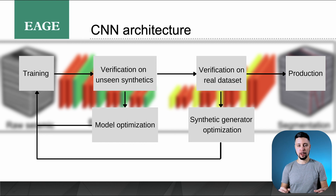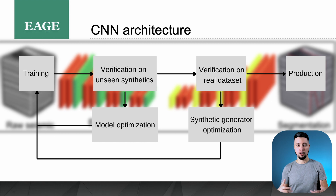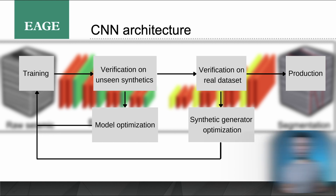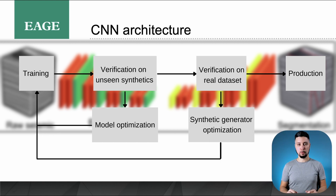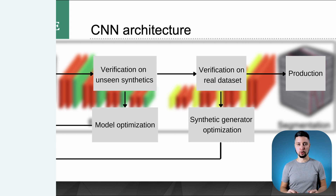If everything looks fine at that stage, we proceed to a second verification stage on a real dataset. If everything's fine, we release the new weights. If not, we go back to our synthetic generation dataset parameters and try to adjust them — meaning our generated dataset does not fully capture features present in the real dataset. By using this workflow, we are always confident that the synthetically generated dataset will be as close as possible to the real one.